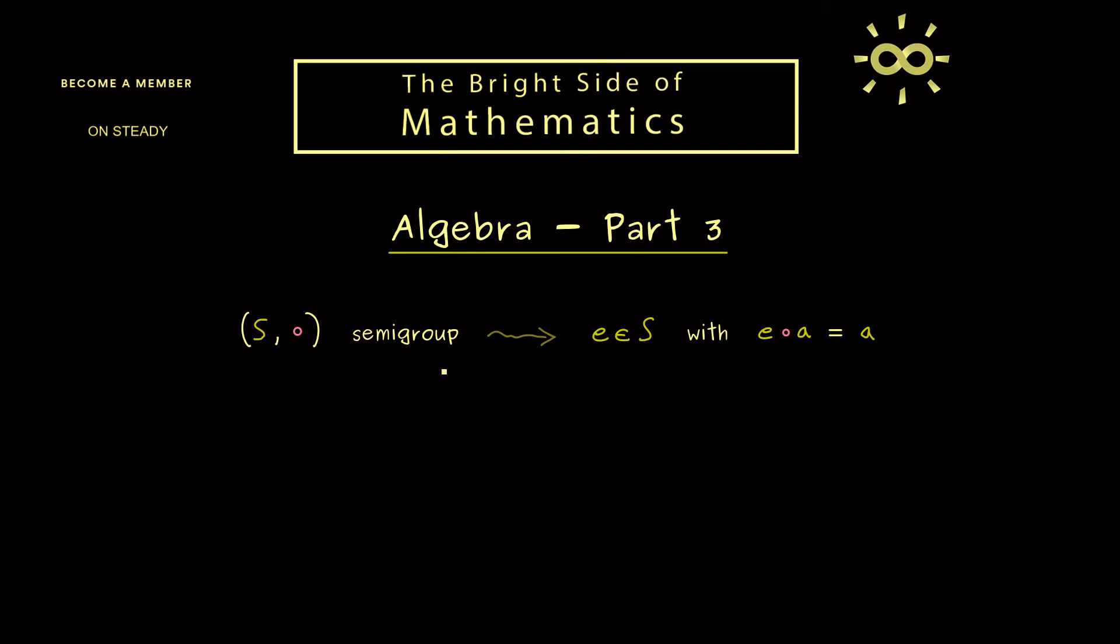However, since you already know that the order matters we should also look at this thing the other way around. This means if you apply E from the right hand side you also want to get A again. Hence this idea here leads us immediately to the formal definition for these identity elements.